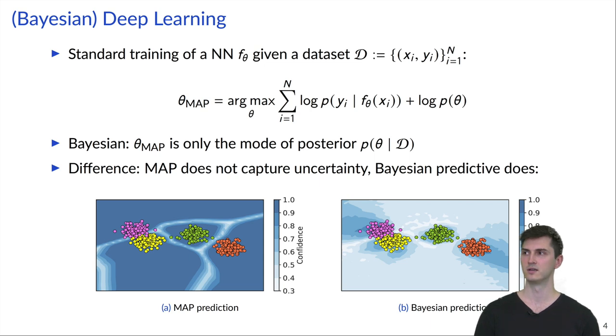This can be seen in figure A, where the MAP predictive has very high confidence far away from the training data, whereas in figure B you can see that the Bayesian predictive has low confidence far away from the training data and only high confidence around the training data. And this is the desired behavior.